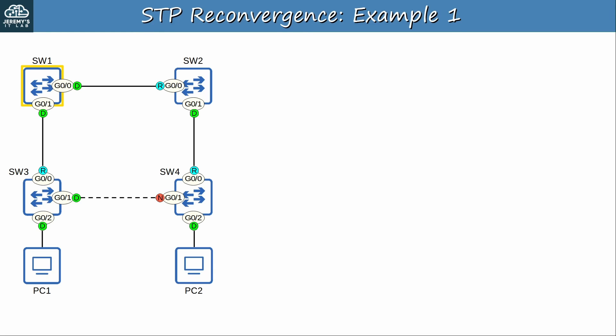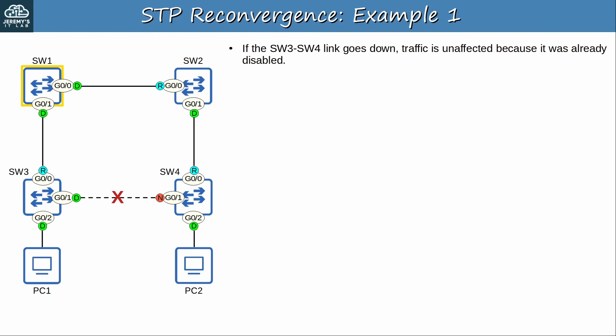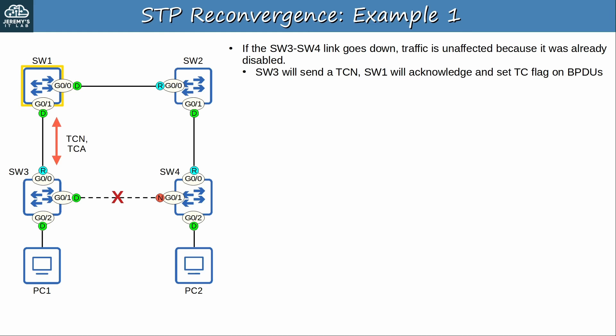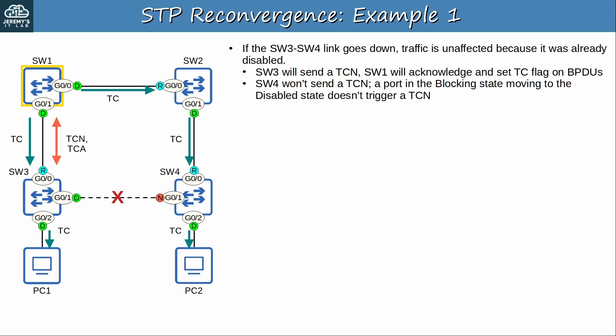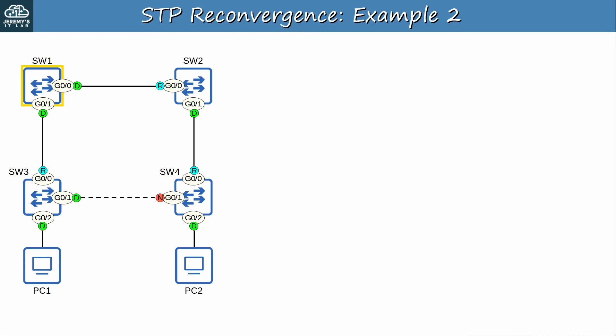Now let's look at a few examples of STP reconvergence. We covered a few examples in the video on STP states and timers, so here let's combine that information with what we just covered about topology change notifications. Here's the first example. If the SW3-SW4 link goes down, traffic is unaffected because the link was already disabled. SW3 will send a TCN, which SW1 will acknowledge and then begin setting the TC flag on BPDUs. So even though the topology change doesn't affect traffic, switches will adjust their MAC address table aging time to 15 seconds. Note that SW4 doesn't send a TCN, because a port moving from blocking to disabled doesn't trigger a TCN. The STP reconvergence time is 0 seconds — SW3 G0/1 and SW4 G0/1 move to the disabled state, but no other ports change their roles or states.